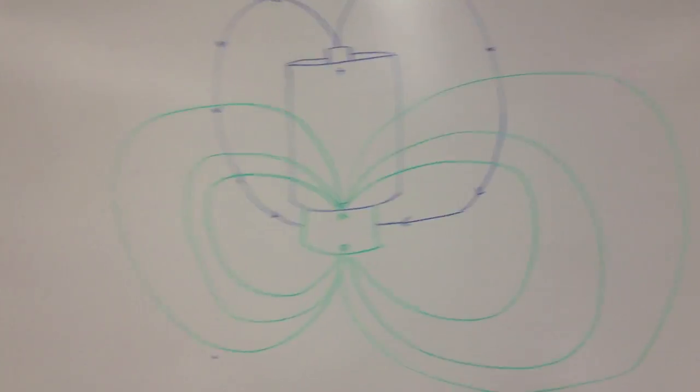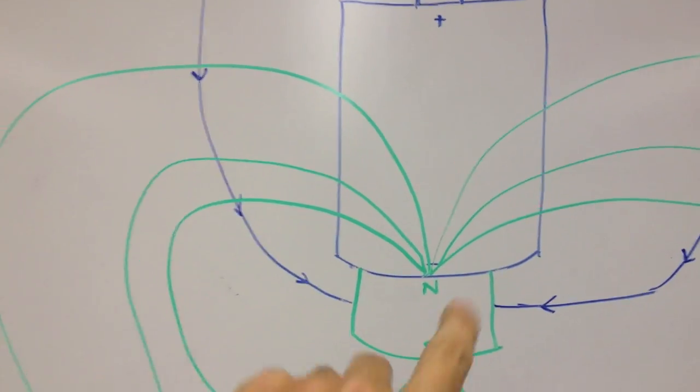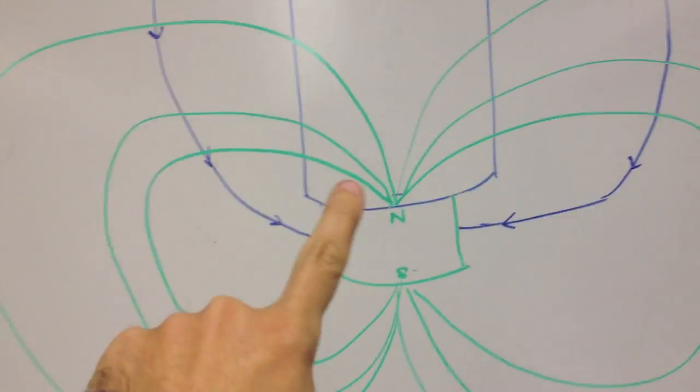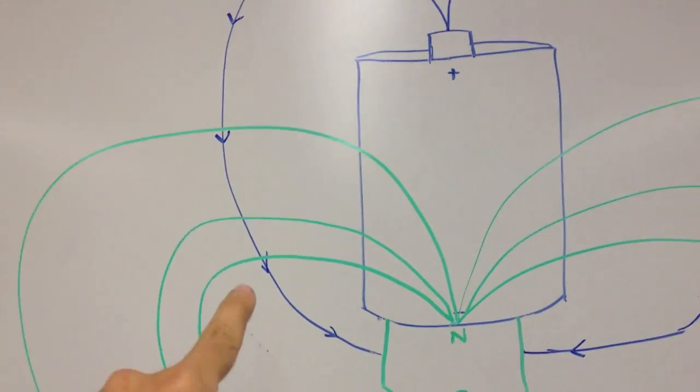Now we'll show you why it works. Look at this. This is the electric current and these are the magnetic lines. Okay, so the magnetic lines are crossing the current perpendicularly.